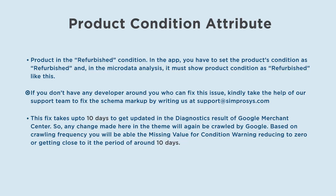If you don't have any developer around you who can fix this issue, kindly take the help of our support team to fix the schema markup by writing us at support@symprosys.com. This fix takes up to 10 days to get updated in the diagnostics results of Google Merchant Center. Any change made in the theme will be re-crawled by Google, and based on crawling frequency, you will see the missing value for condition warning reducing to zero in a period of around 10 days.